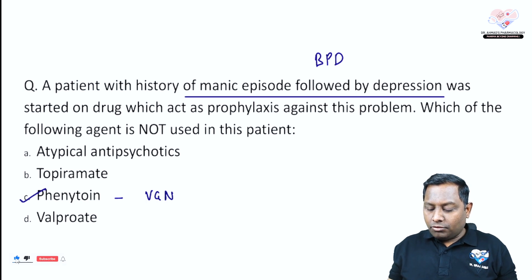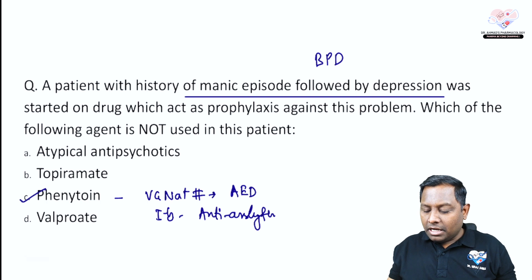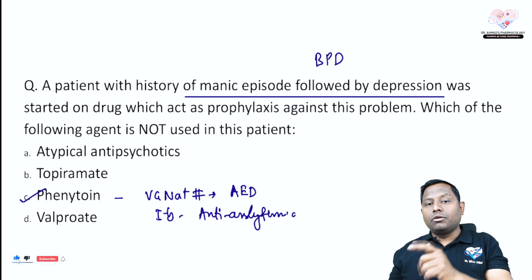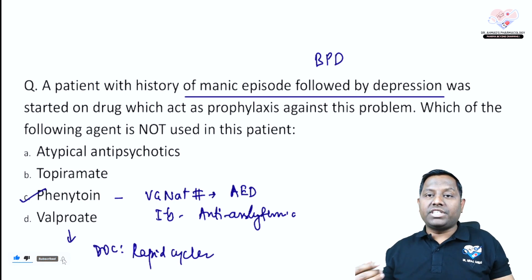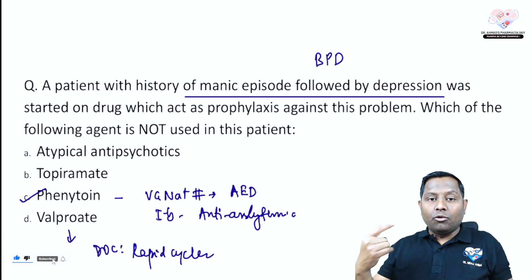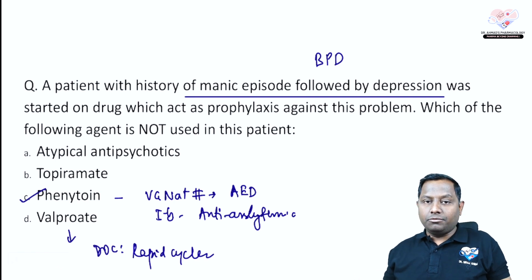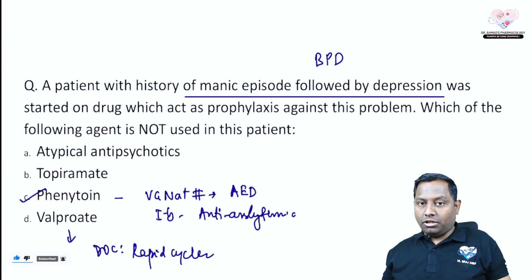Phenytoin is something that cannot be used in bipolar disorder. Phenytoin is a voltage-gated sodium channel blocker with anti-epileptic and class 1B anti-arrhythmic properties, but it does not have action against bipolar disorder. Valproate can definitely be utilized — it is the drug of choice in a rapid cycler patient. Anyone having four or more cycles of mania and depression per year is called a rapid cycler.